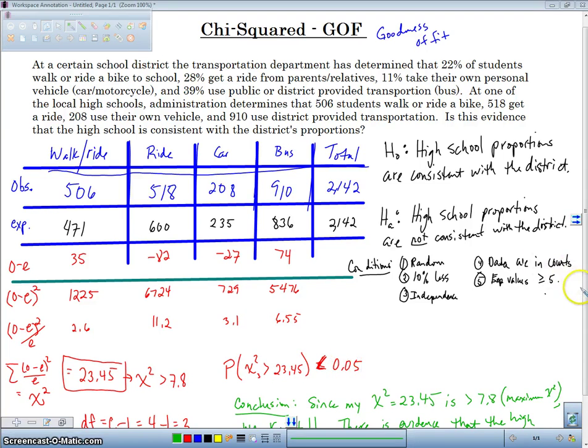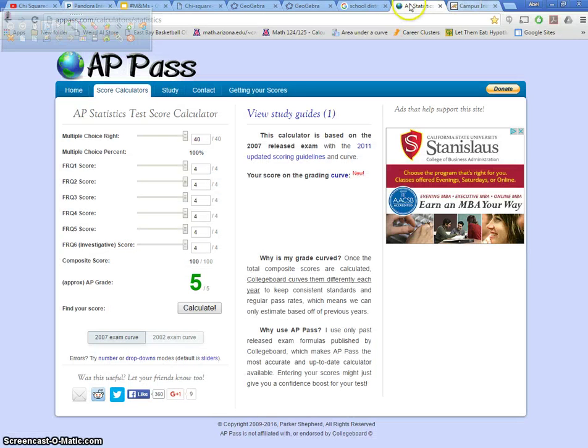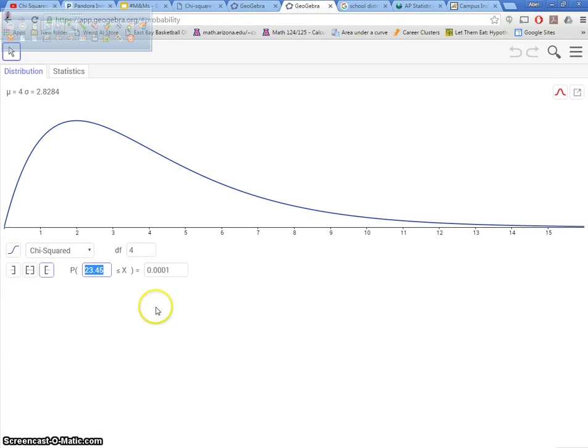I go through all the steps and everything you need for a chi-squared goodness of fit test and how to calculate the chi-squared statistic. This video is just to show you how to use a calculator and GeoGebra to find the p-value. Let's use GeoGebra to find the p-value of chi-squared with three degrees of freedom and a chi-squared value of 23.45. I'm going to go to GeoGebra. That's not GeoGebra, that is Pandora. This is GeoGebra.